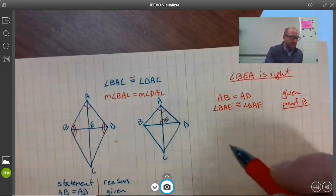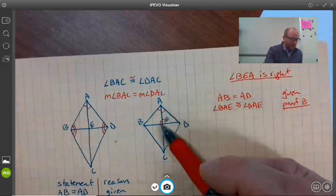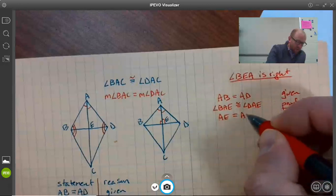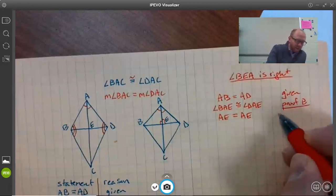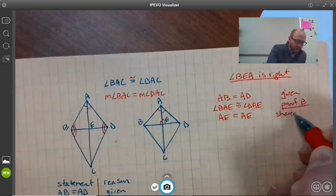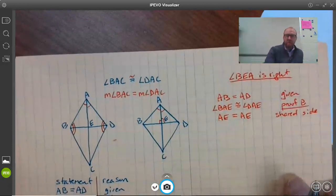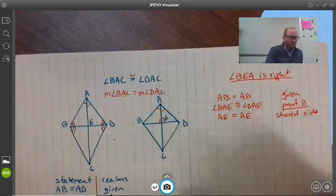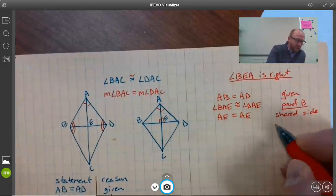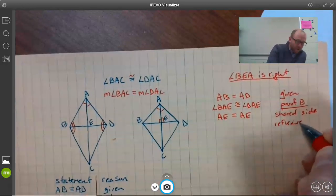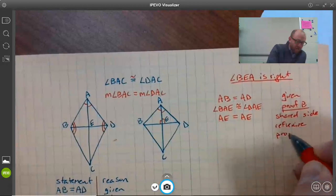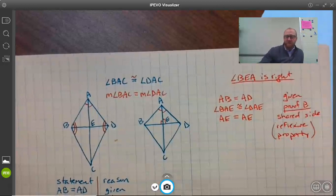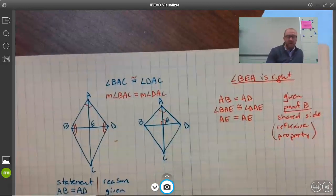Next, we have that AE equals AE, and here we have that shared side thing going on. This is pretty common—two triangles butt up against each other, they share a side, and that's easy-to-extract information. You'll also see reflexive property sometimes given as a reason for that. Reflexive property is that everything is equal to itself.